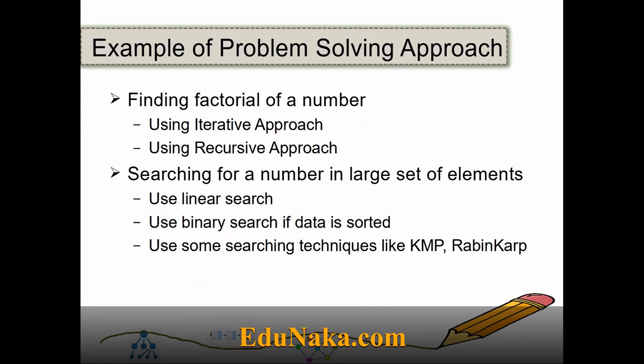Here are some small examples of a problem solving approach. Finding the factorial of a number: if we are told to write a program or algorithm for finding a factorial, we can use two approaches. The first is an iterative approach, using looping to find the factorial. The other is using a recursive approach — by making use of a recursive function to find the factorial of a number.